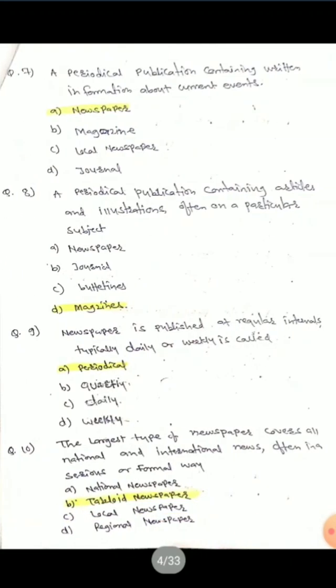Question 7: A periodical publication containing written information about current events. Options are: newspaper, magazine, local newspaper, journal. The correct answer is newspaper — it gives information about current events.